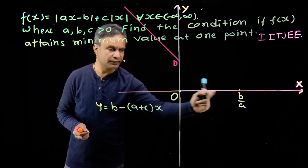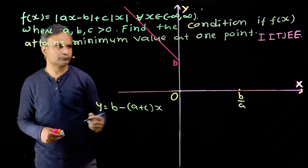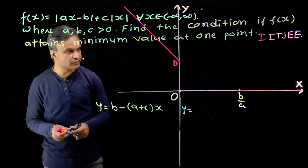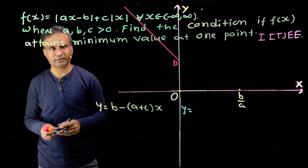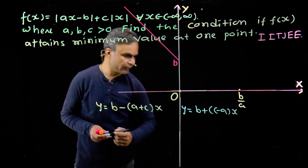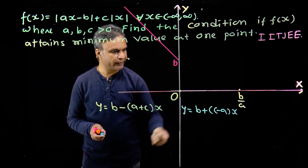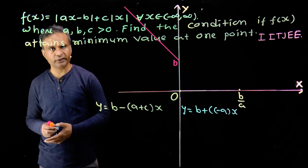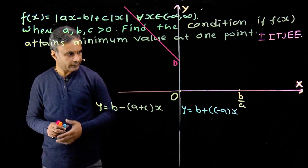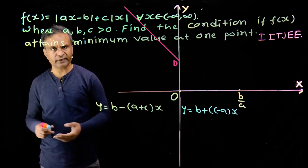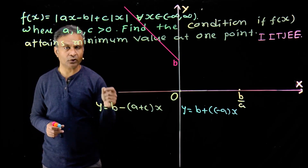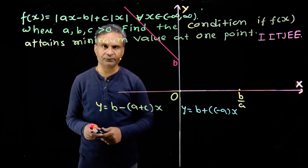For x between zero and b upon a, modulus of x equals x (since x is positive), but x is still less than b upon a so the other term remains b minus ax. Therefore y = (b minus ax) + cx = b + (c minus a)x. This is a straight line with slope (c minus a) and y-intercept b. The slope can be negative, positive, or zero depending on the values of c and a.